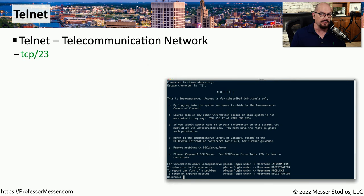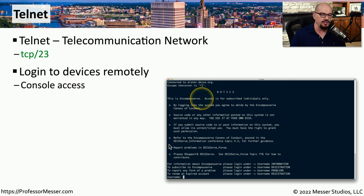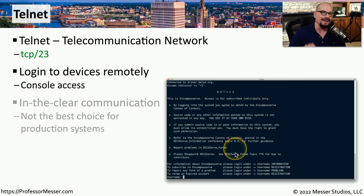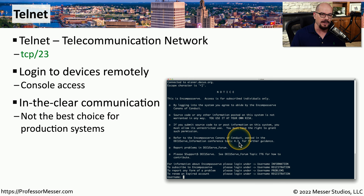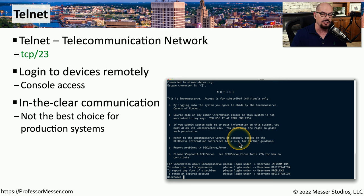There's another way to connect to a remote device using a text-based or console front end, and that's using Telnet, or the Telecommunication Network Protocol. Telnet commonly uses TCP port 23 to provide this connection. Just like SSH, Telnet provides a text-based front end that allows us to connect to the remote console of another device. But unlike SSH, all communication between the Telnet client and the Telnet server is sent in the clear, or non-encrypted. This means anyone capturing packets between these two devices will see everything — including usernames, passwords, and everything else. This is why you shouldn't use Telnet on production networks; instead, always use SSH for terminal communication.